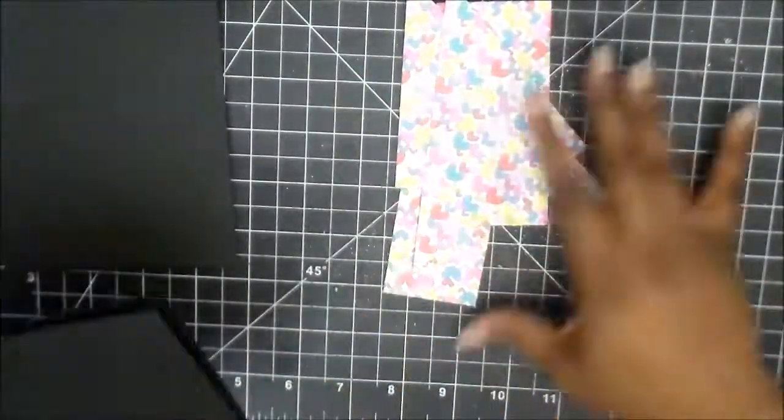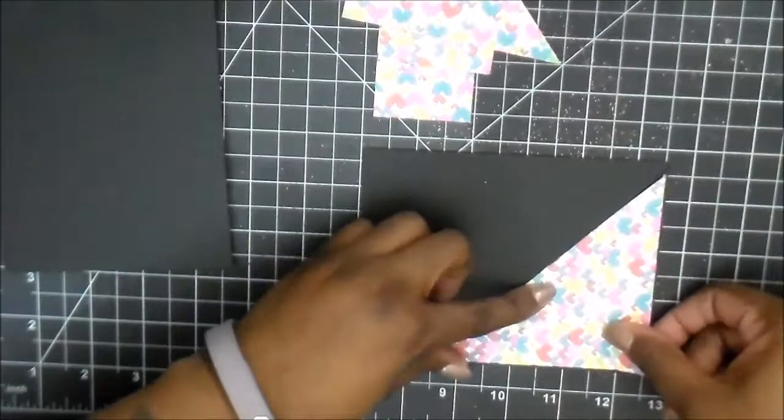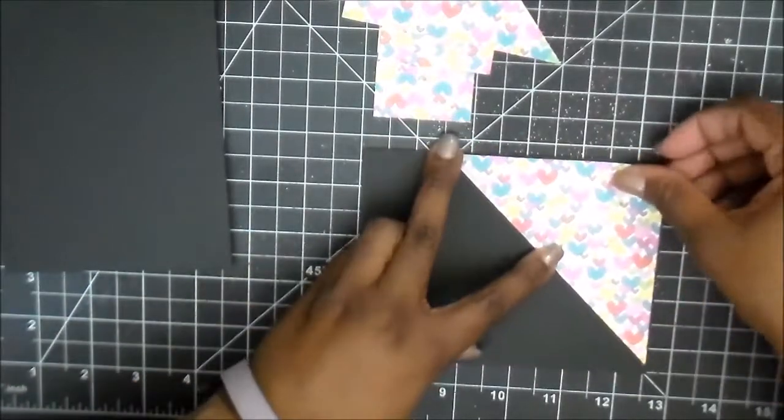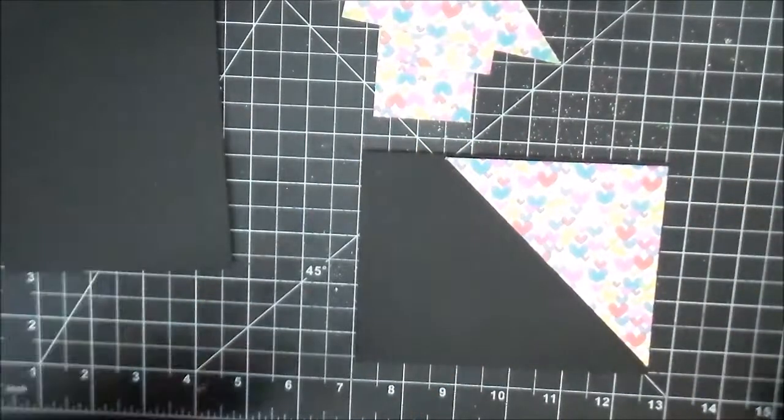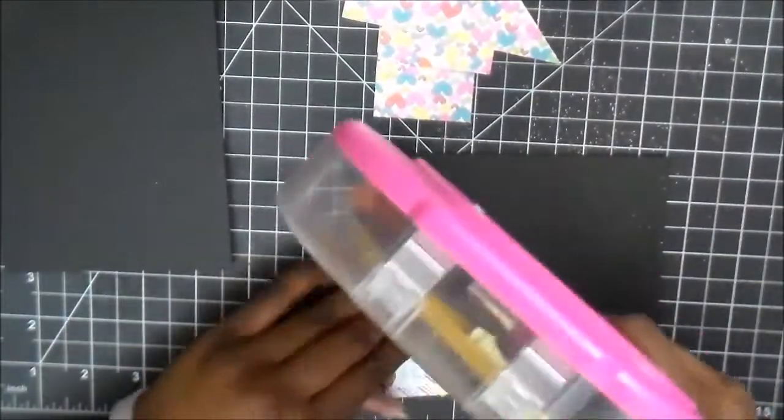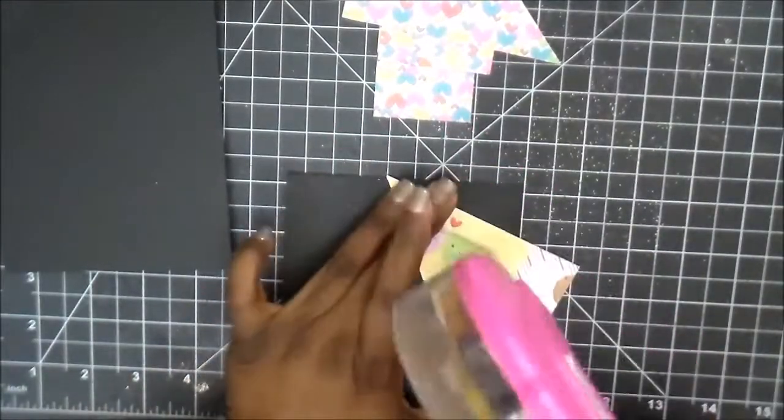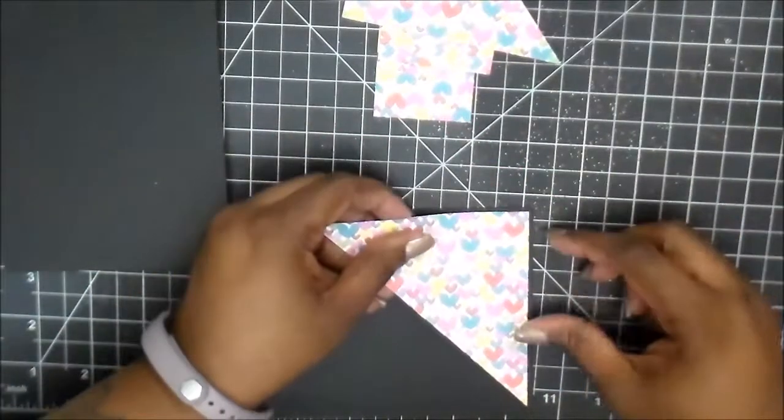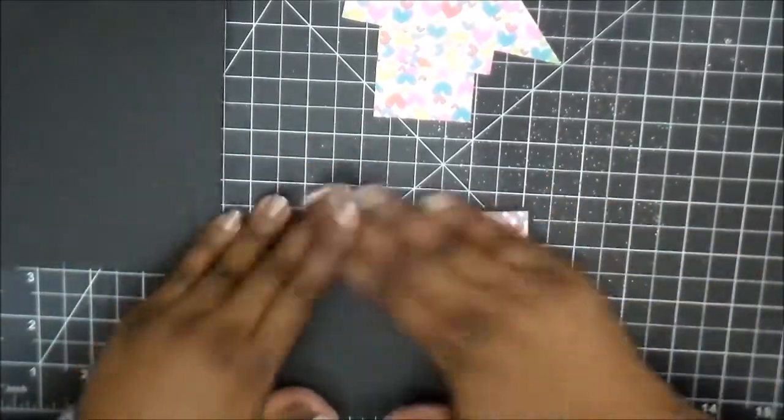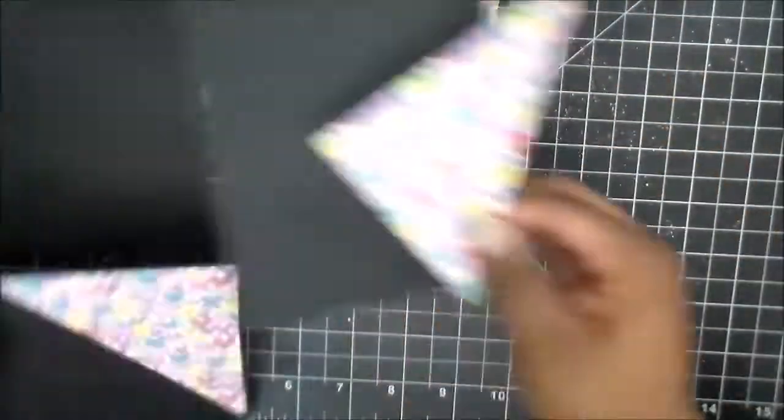Alright. And once you get those pieces cut out, I already had some A2 size cards that were already cut and folded. So I'm using that particular cardstock, and I want to say I cut it at 4 1/4 by 11, and then scored it at 5 1/2.